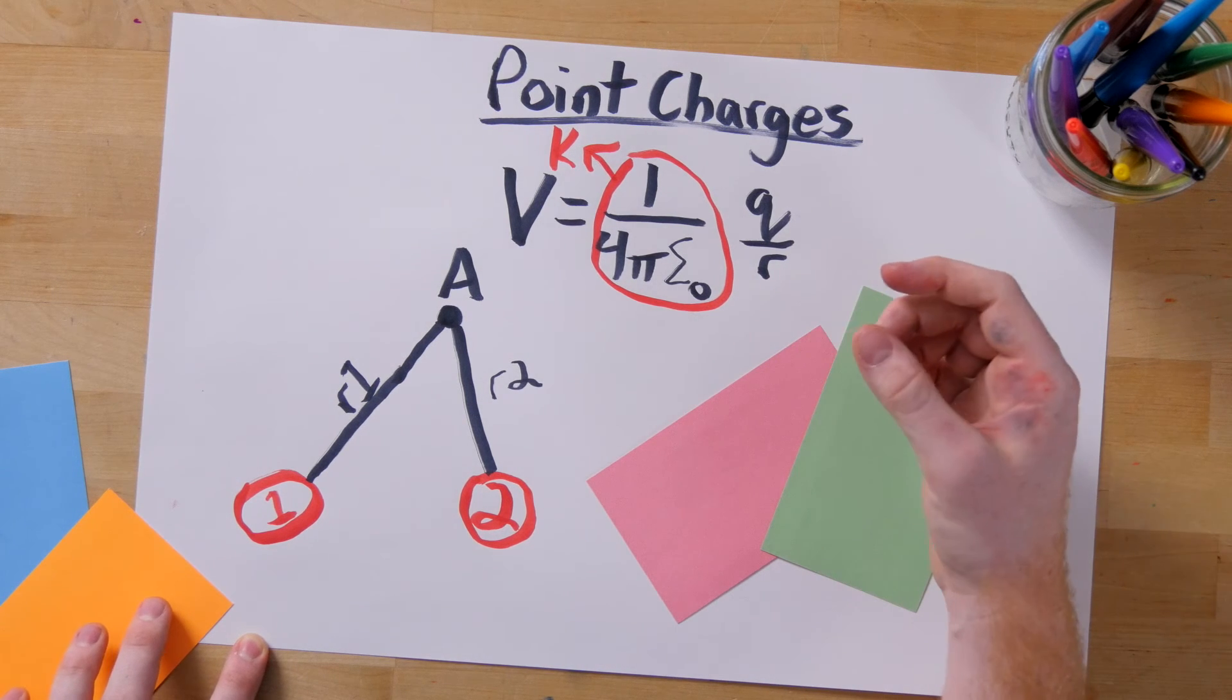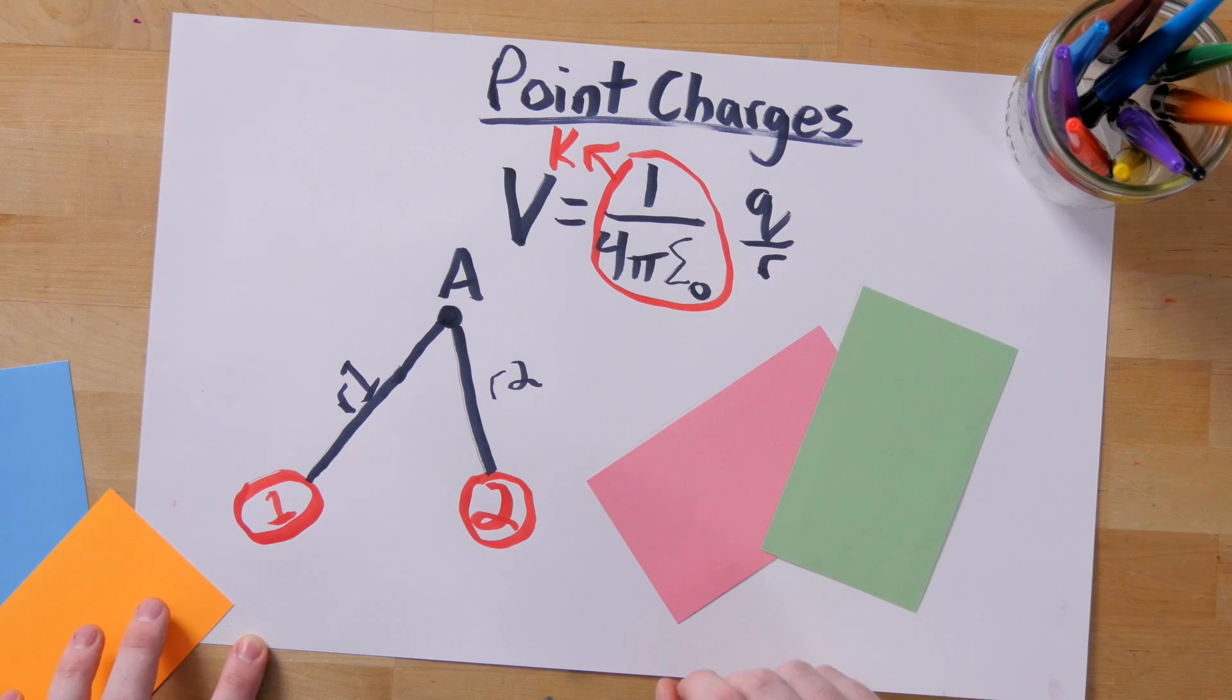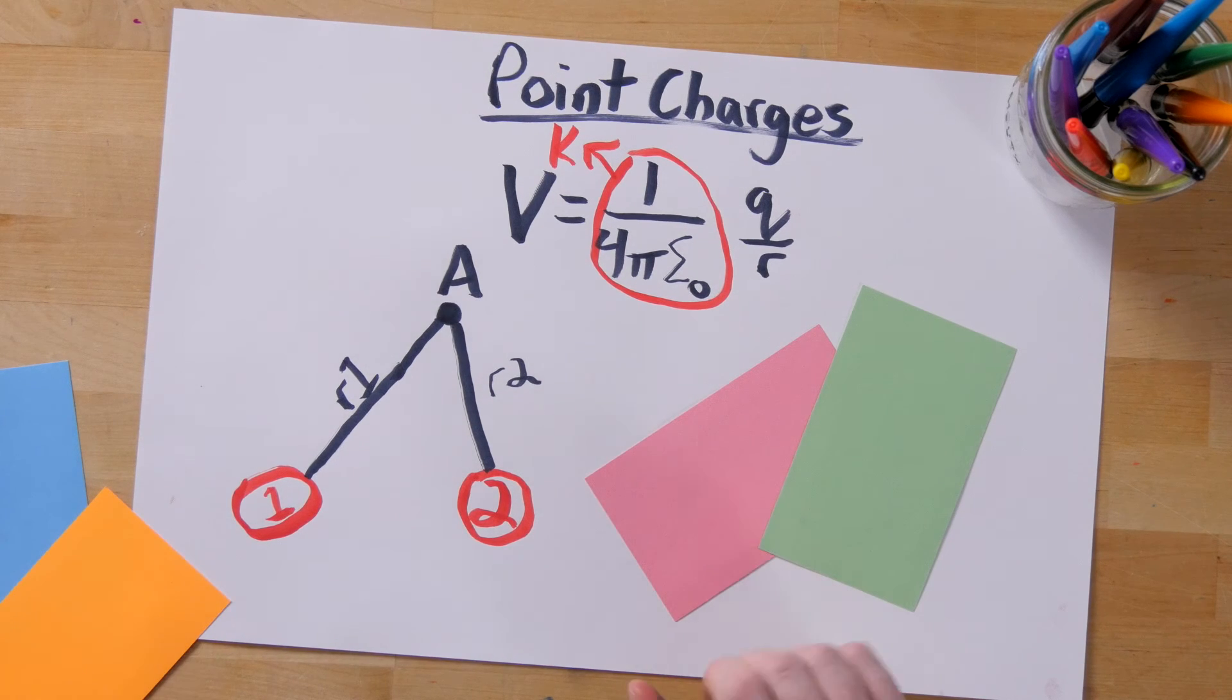So if I know the potential created by charge 2 and charge 1, all I have to do is add it together to figure out the potential for my system.